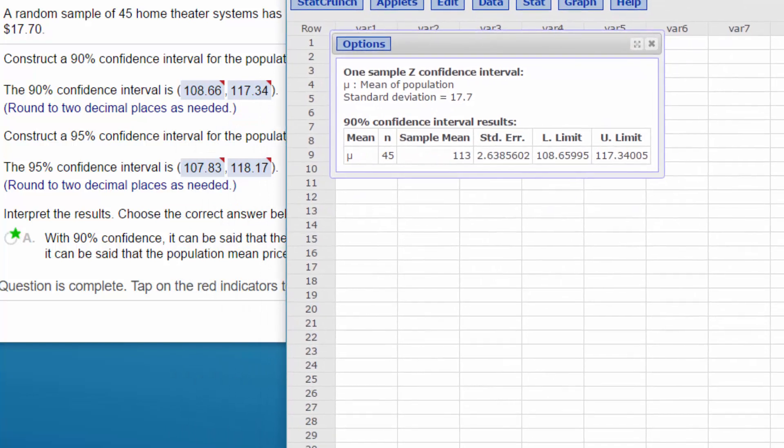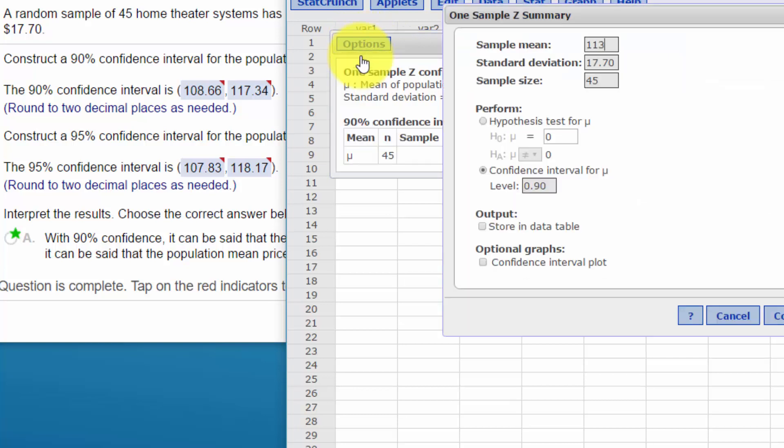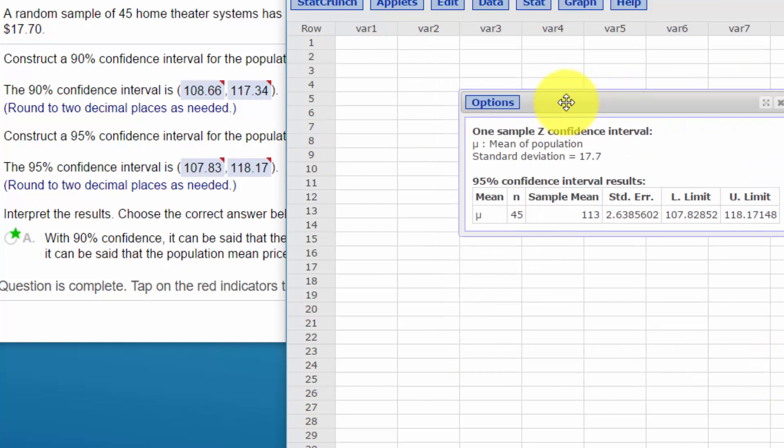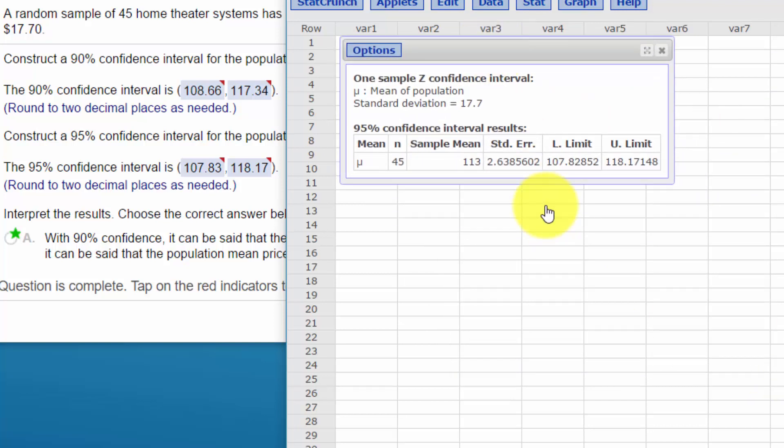Next, we want the 95% confidence interval. We get that very quickly by clicking on Options, Edit. That brings up our dialog box. And all we have to change is the 90 to 95. Click on Compute. And we have the upper and lower limits for the 95%, which is 107.83 rounded to two decimal places, and 118.17. And that's the answers they wanted there.